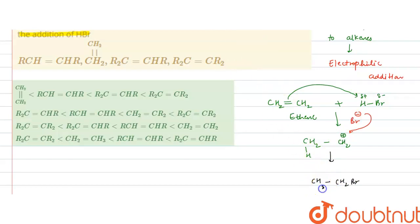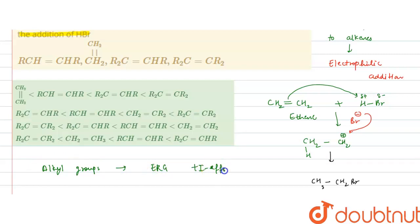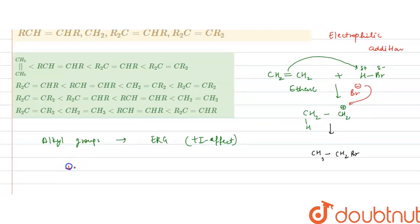Now the reactivity of alkenes will be affected if alkyl groups are present on the carbon-carbon double bond. Alkyl groups have a +I effect — they are electron-releasing groups. By showing the +I effect, alkyl groups donate electrons to the C=C bond.